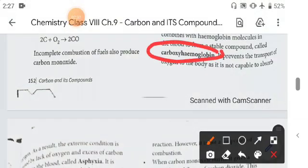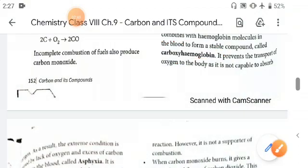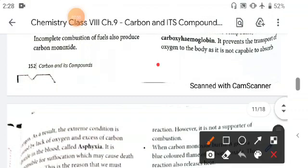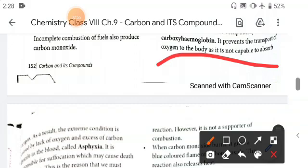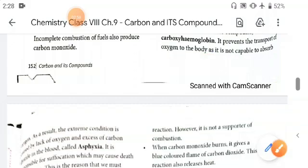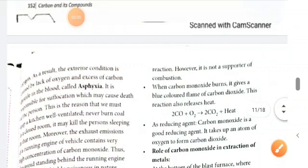It readily combines with hemoglobin molecules in the blood to form a stable compound called carboxyhemoglobin. This carbon monoxide will combine with hemoglobin very rapidly, forming carboxyhemoglobin, and it prevents the transport of oxygen to the body because it is more reactive than oxygen.